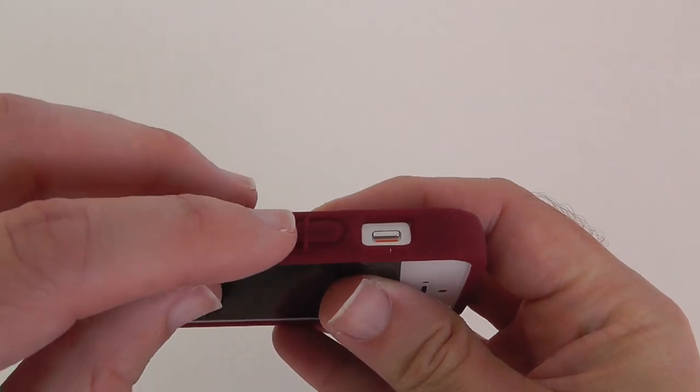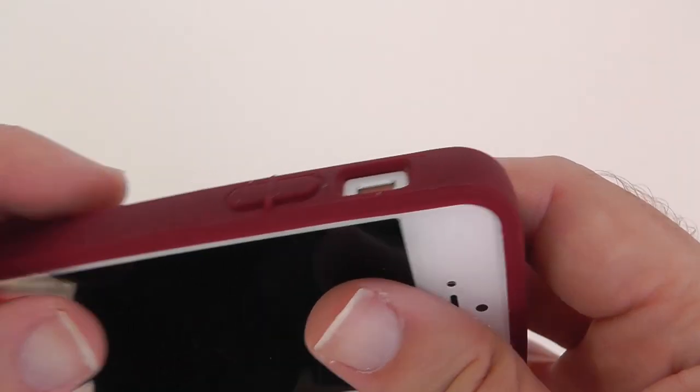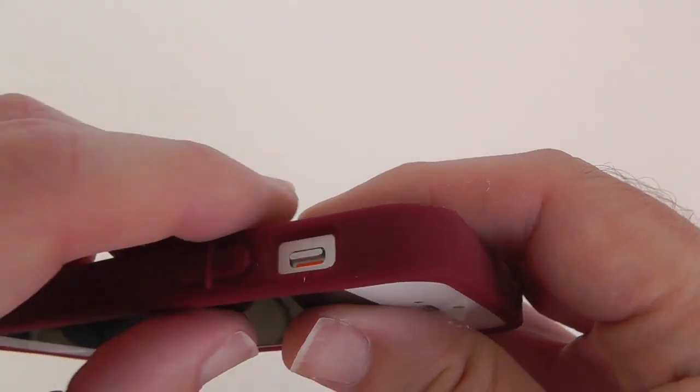Round on this side we've got integrated volume buttons which I'll show you in action in a short while. We've also got a cut out for that silencer switch.